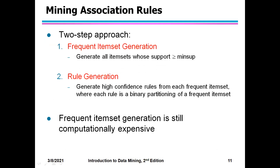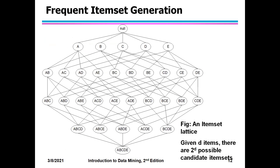There are two ways of mining association rules: one is frequent item set generation, where support should be greater than minimum support, and the second is rule generation. In frequent item set generation, this figure is what I call an item set lattice. I have different items here — A, B, C, D, E — and I can form all combinations of these items, just like we did in the first module.